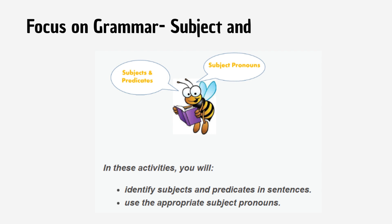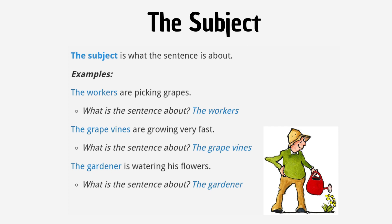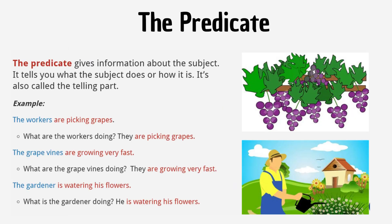Focus on grammar: subject and subject pronouns. In these activities, you will identify subjects and predicates in sentences and use the appropriate subject pronouns. The subject is what the sentence is about. Examples: 'The workers are picking grapes' — the subject is 'the workers.' 'The grape vines are growing very fast' — the subject is 'the grape vines.' 'The gardener is watering his flowers' — the subject is 'the gardener.' The predicate gives information about the subject — it tells you what the subject does or how it is. It's also called the telling part.